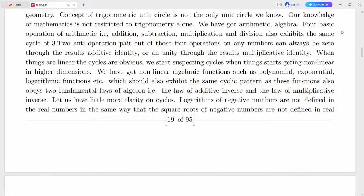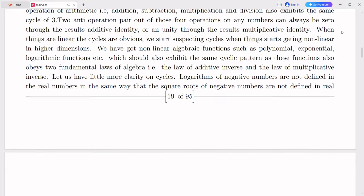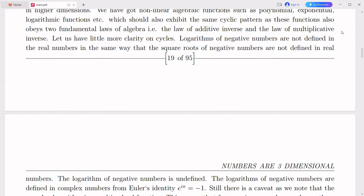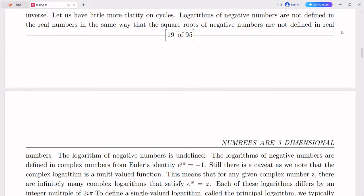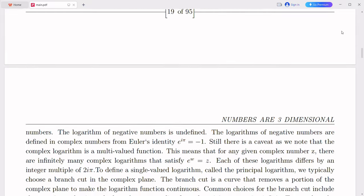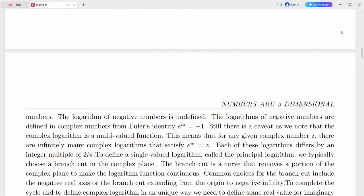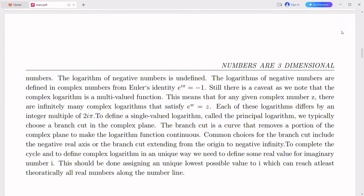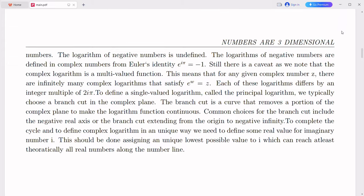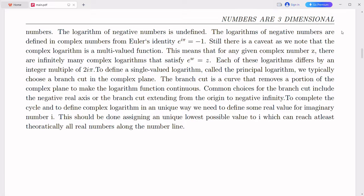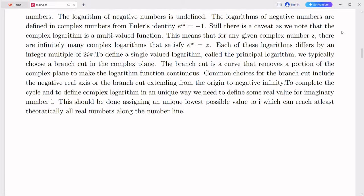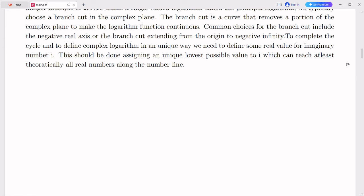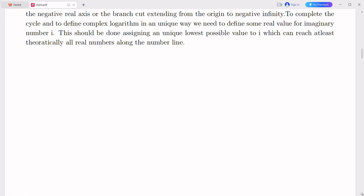The fine structure constant, denoted by alpha, is a fundamental constant in physics that characterizes the strength of the electromagnetic interaction between charged particles. Its value is close to 1/137. The fine structure constant is dimensionless and plays a crucial role in various areas of physics, including quantum electrodynamics. On the other hand, the Charles's ratio is a constant that arises from the ideal gas law and relates the change in volume of an ideal gas to its change in temperature at constant pressure. Approximately, this ratio is close to 1/273.